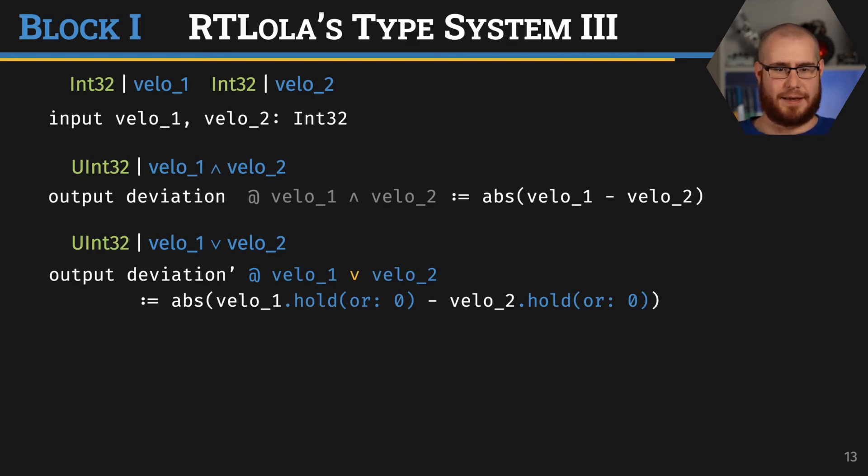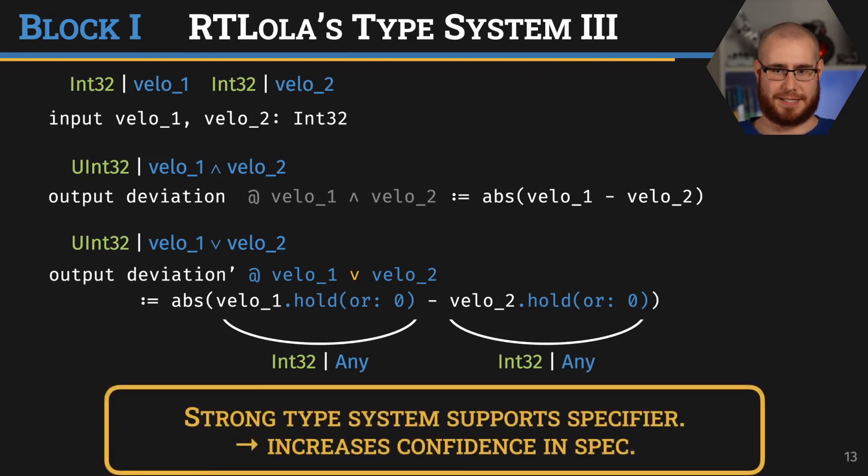For the type system, the sub-expressions would get the expected value type, and the pacing type is any. Any states that we have no idea what kind of timing we want—it can be anything. In fact, the whole expression of deviation prime has the pacing any. Thus, RTLola forces the specifier to also state what the timing is supposed to be. Because if the expression does not yield any information on the timing, we don't know when to evaluate deviation prime. The specifier has to supply this information. What this really shows is that this strong type system supports the specifier in their quest of specifying what they have in mind, and this increases the confidence in the specification.